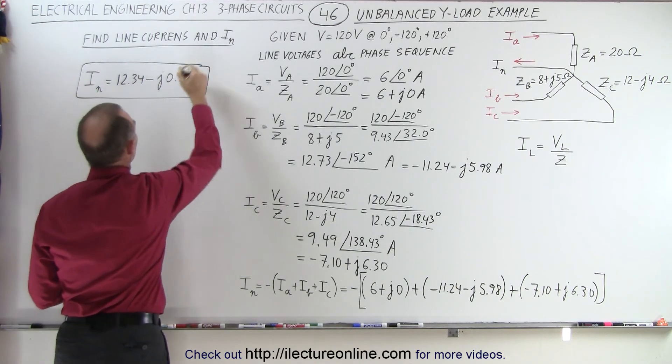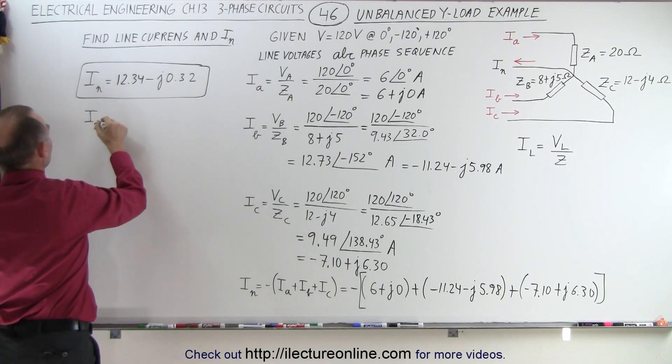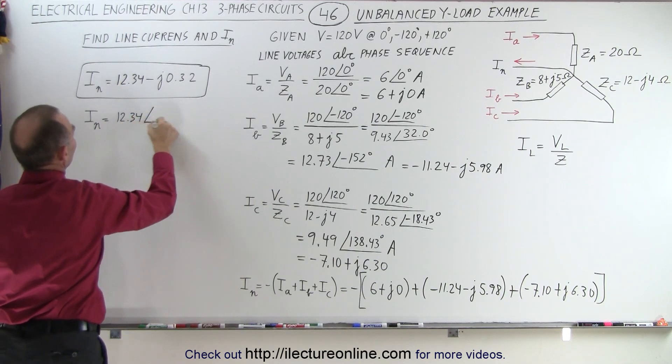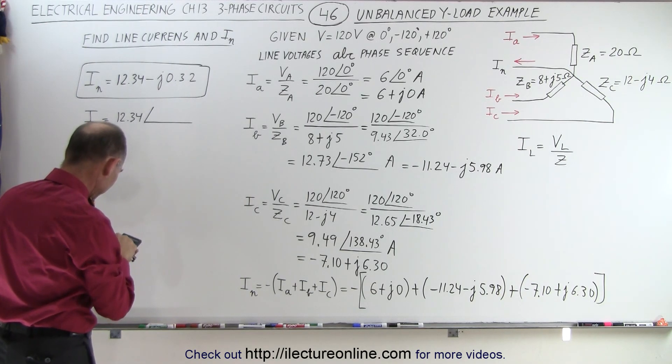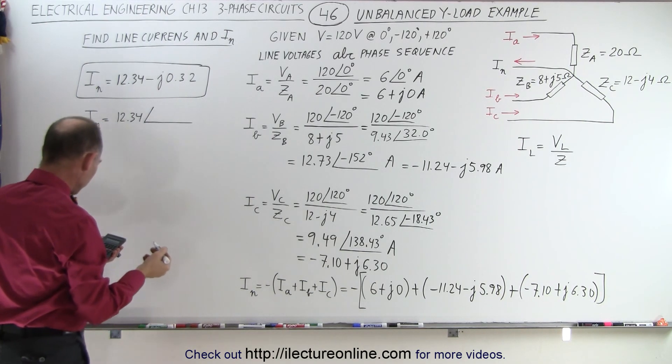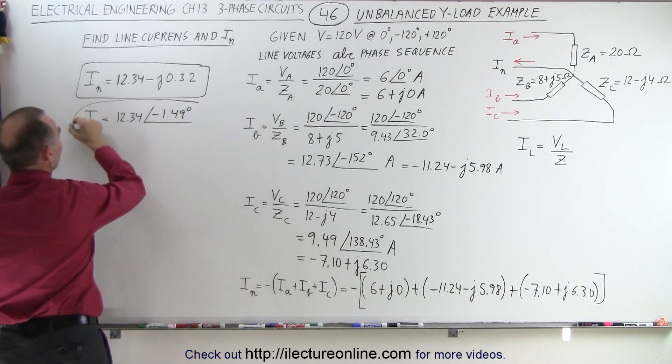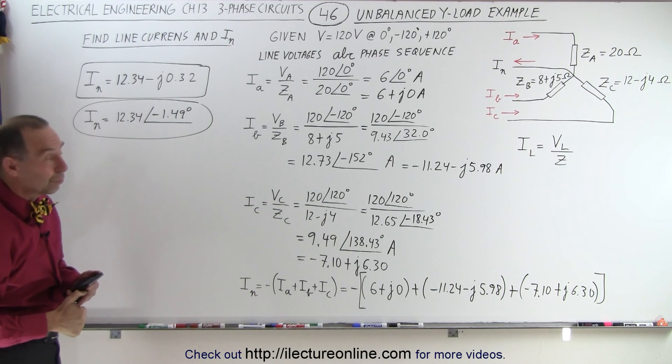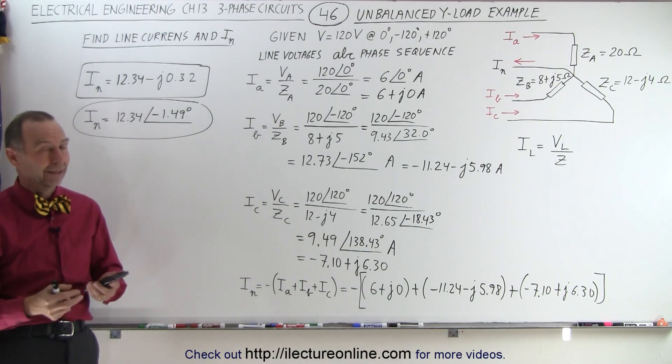So, there's our return current. Obviously, you can see it's not zero. If we want to go magnitude and phase angle format, I sub N is equal to, that's really tiny, so this will become 12.34, with a phase angle of 0.32 divided by 12.34. It's a negative, take the inverse tangent, and we have minus 1.49 degrees. So, there's the return current in magnitude and phase angle format. And that's what you need to do when you're trying to figure out the currents for an unbalanced Y load, when the impedances are not balanced, even though you have a balanced source. That is how it's done.